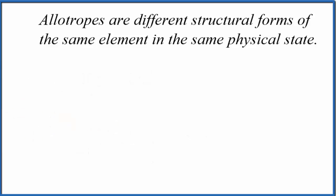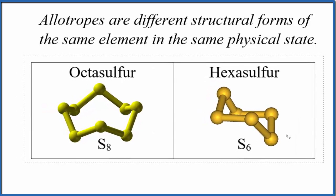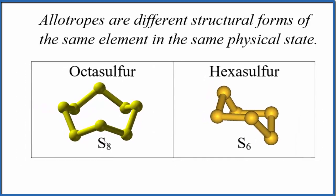But what about S8 and S6, octosulfur and hexasulfur? Here we do have the same elements—each one's made up of only sulfur. They are the same physical state, although it's not written, they are both solids, and they do have different structures. So these are allotropes of sulfur, two common allotropes of sulfur.